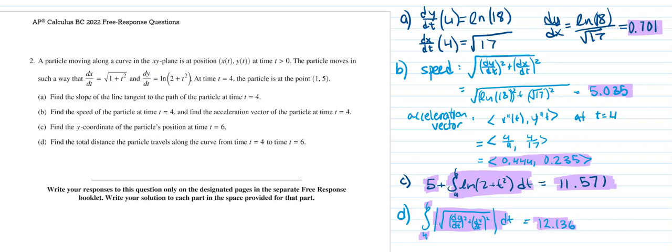For the acceleration vector, we have the first derivatives of x and y coordinates given. I needed to find the second derivatives using my calculator and plugged in t equals 4. The answer down here highlighted is in brackets: (0.444, 0.235).